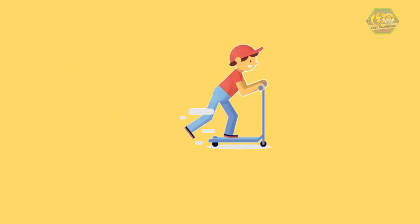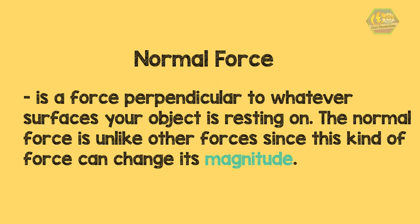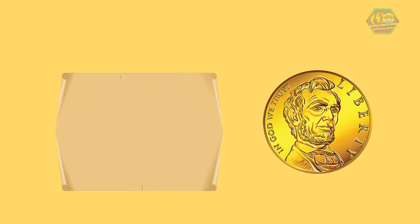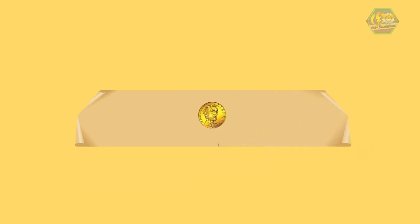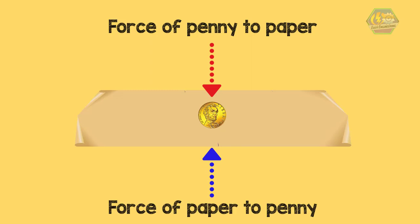That equal force acting upon you is called the normal force. The normal force is a force perpendicular to whatever surface your object is resting on. Unlike other forces, the normal force can change its magnitude. For example, if you hold a piece of paper in the air and place one penny on it, the penny applies a force on the paper and the paper applies an equal force back. When you add a second penny, the force doubles — meaning the normal force is doubled.